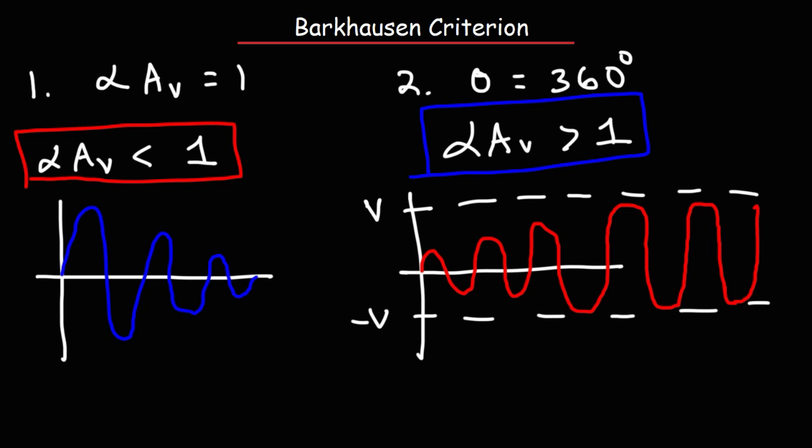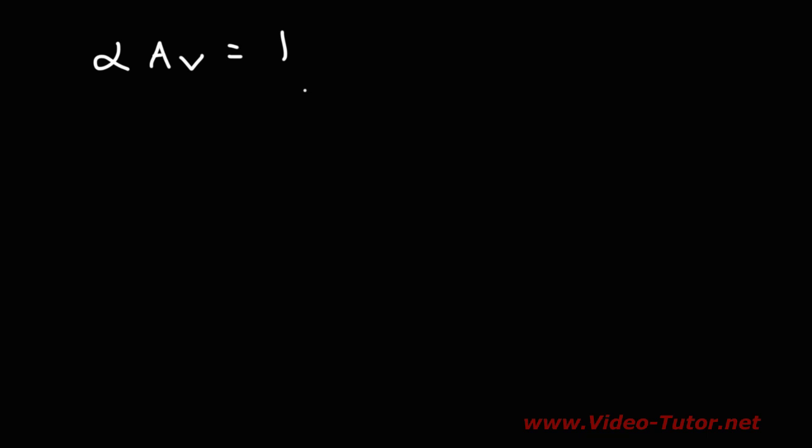If the loop gain equals one, sustained oscillations will occur and we can get a nice sine wave.